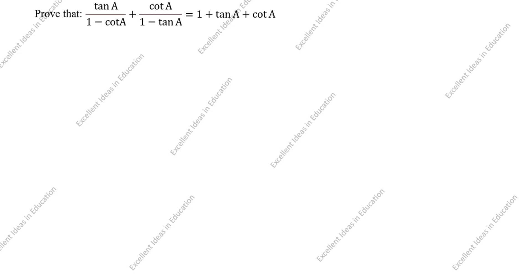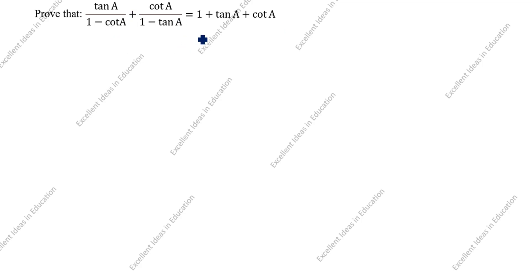Hi friends, welcome to my channel Excellent Ideas in Education. Today we are going to solve this trigonometry identity problem. This is a very important problem. Prove that tan A divided by 1 minus cot A plus cot A divided by 1 minus tan A is equal to 1 plus tan A plus cot A. We will prove LHS equal to RHS.